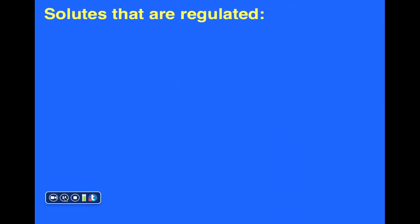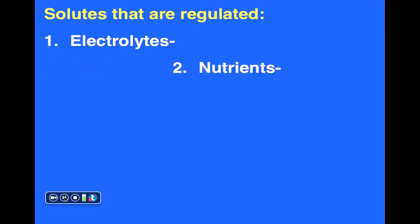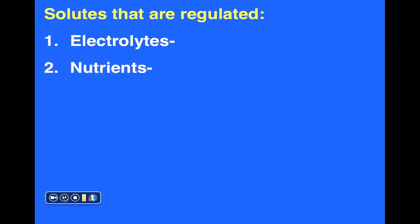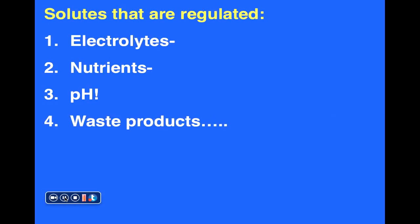Let's briefly mention some of the solutes and components within our bodies. We can talk about electrolytes — various ions such as sodium, potassium, and chloride ions that need to be regulated. Also various nutrients like glucose and vitamins, and pH — the concentration of protons within our blood that also needs to be regulated — as well as various waste products.